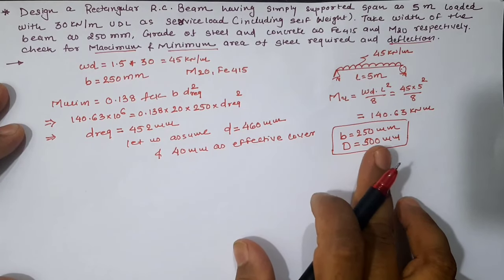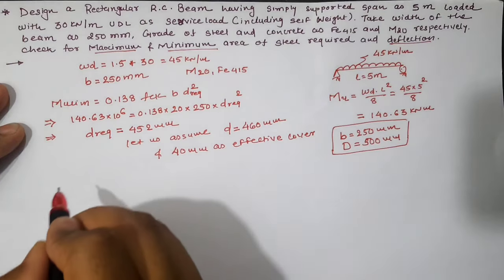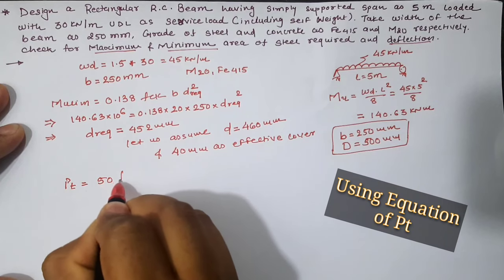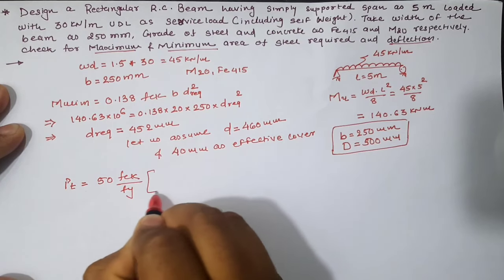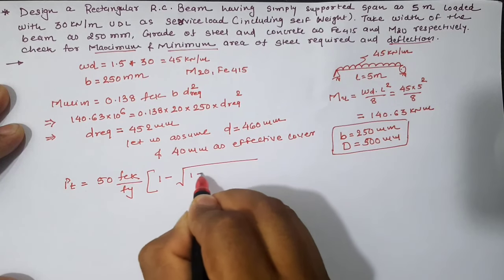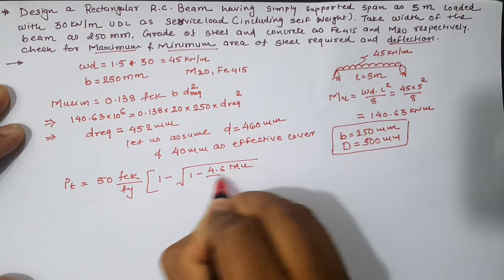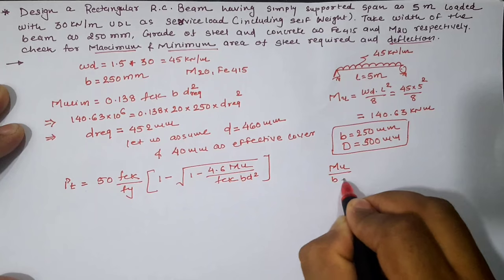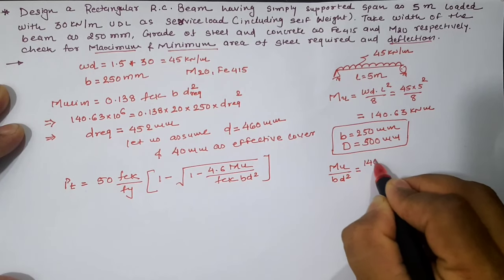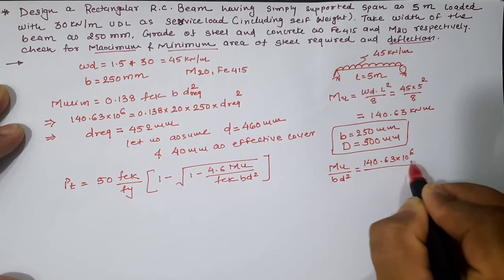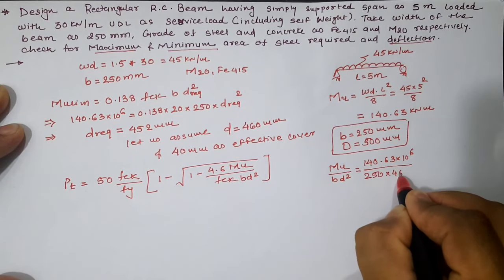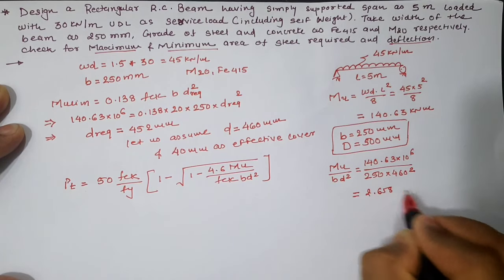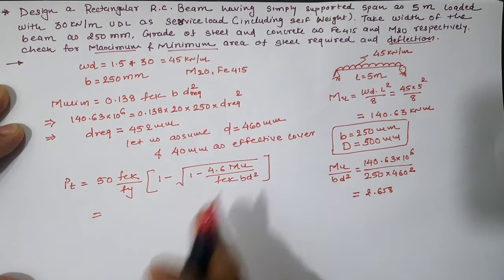So our design beam cross-section is 250 by 500 mm. Now let us calculate reinforcement required in this singly reinforced beam. First of all, required area of steel Pt according to the equation, Mu/bd² is equal to 2.658.